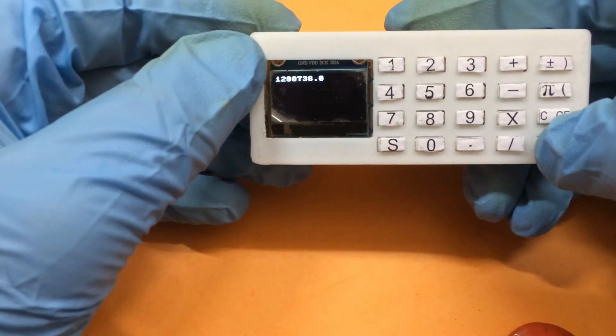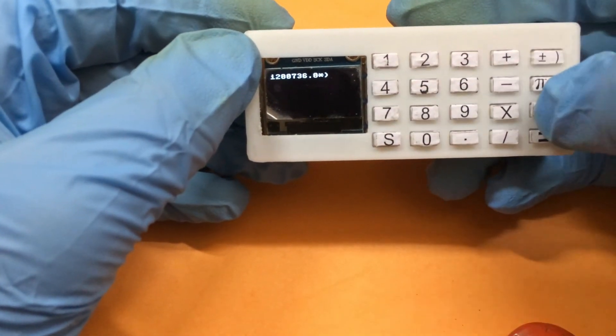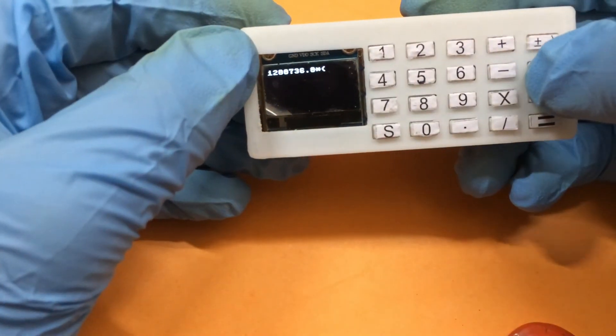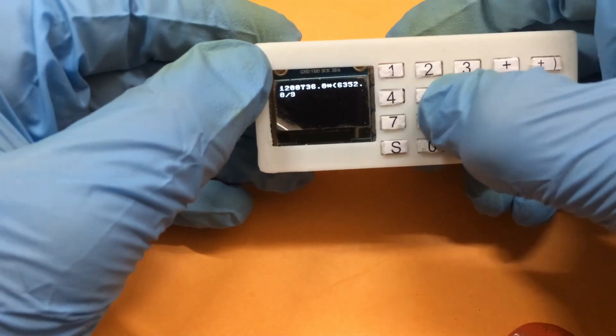We can also use the brackets to define priority in the equation. The button on the bottom left corner is for the shift case. Like to add the bracket we first need to click the S button then the bracket button.